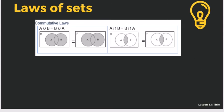We have the commutative law. When we take the union of A and B, even if we reverse the order, A union B equals B union A — the result does not change. Similarly, the intersection of A and B equals the intersection of B and A — whatever the given data, the intersection remains the same regardless of order.